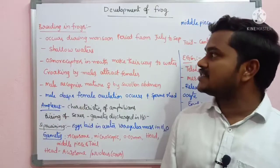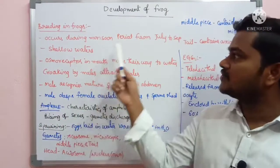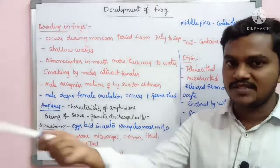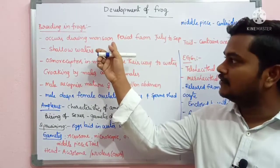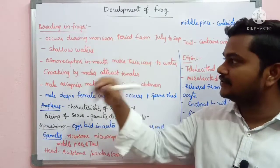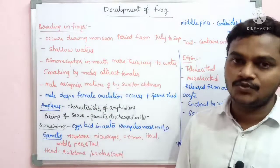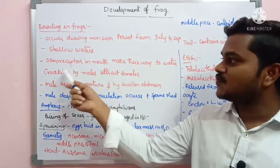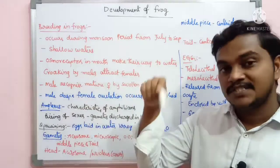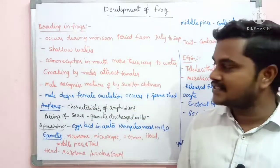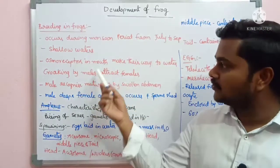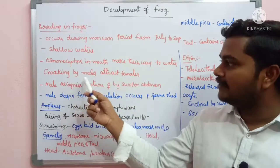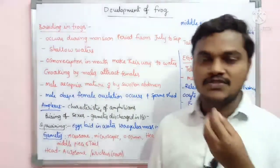During monsoon season, from July to September, this is the maximum breeding season. Frogs gather in shallow waters. Generally, osmoreceptors, which are present in the mouth, are water-related receptors that make the way to water. Croaking by males attracts females.